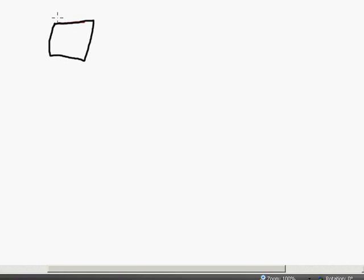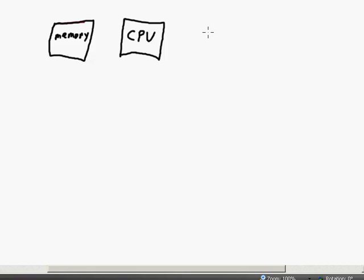Before we go into more details about ASCII, let's draw a cartoon representation of a simple computer system. Right here we've got some memory — that's where all of our bits are stored. And without the rest of the computer system, without the CPU (central processing unit) and without all of the inputs and outputs, that memory is pretty useless.